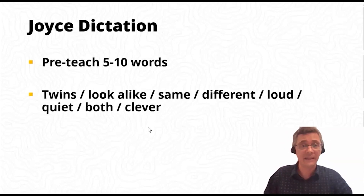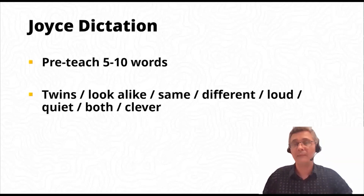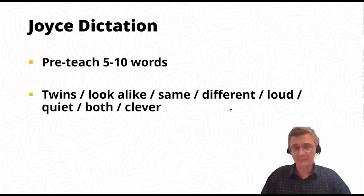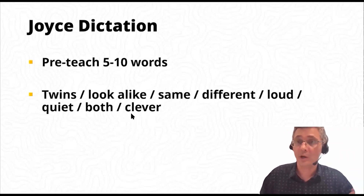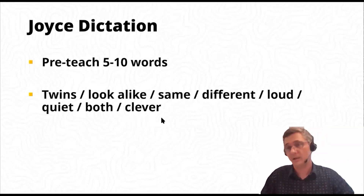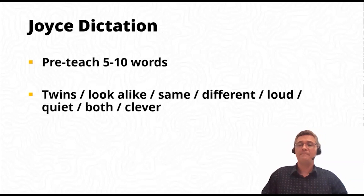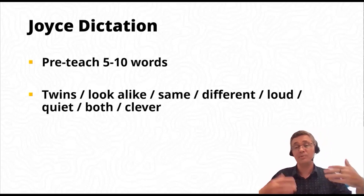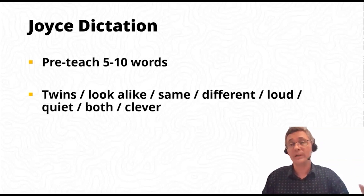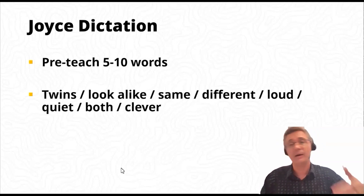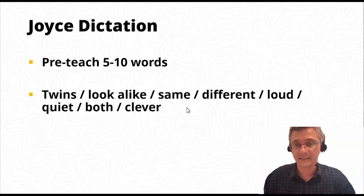Let's check the answers. Once we've looked at the words and confirmed correct spellings, we can talk about what the words mean, the parts of speech, and how to use them. The next thing I would do with the Joysticktation is ask students to predict what the article or reading is about. Students go back with a partner or in a group and discuss what they think this reading is about.